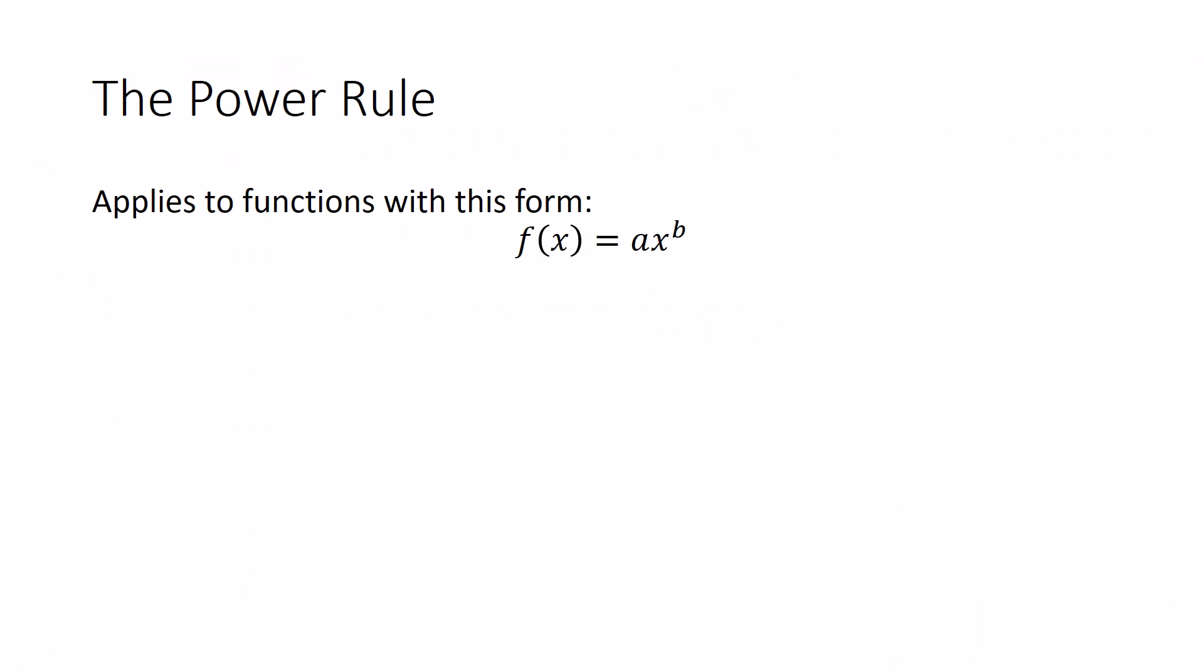The power rule applies to functions with this form: f(x) equals a times x to the b, the power function. a can be any number, b can be any number except for zero, and then it's a power function. If your function has this shape, this form, then it's easy to find its rate of change or its derivative.